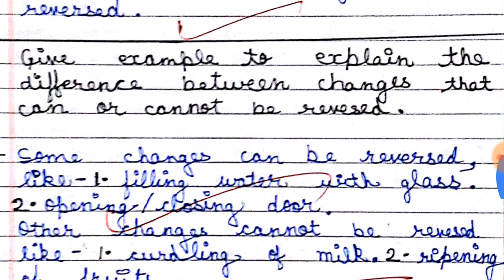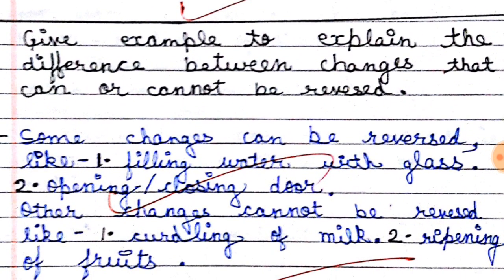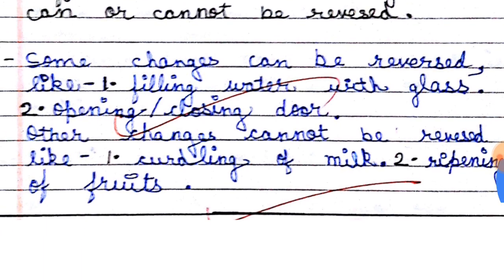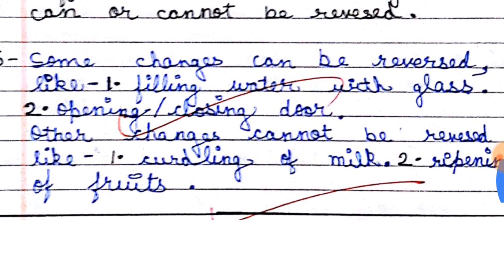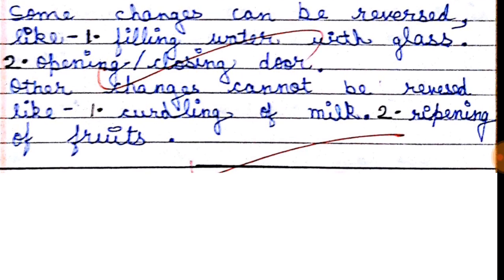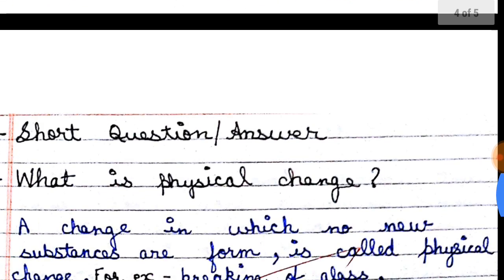Next question: give examples to explain the difference between changes that can or cannot be reversed. Some changes can be reversed — like filling water in a glass, or opening and closing doors. If you fill a glass with water you can empty it, and you can close the door again, so these changes can be reversed. Other changes cannot be reversed — like curdling of milk: once milk has curdled, you cannot make it back into milk. Ripening of fruit: once a fruit has ripened, you cannot make it unripe. So these cannot be reversed.